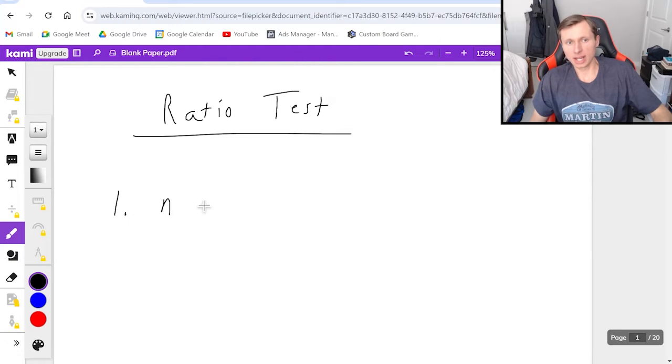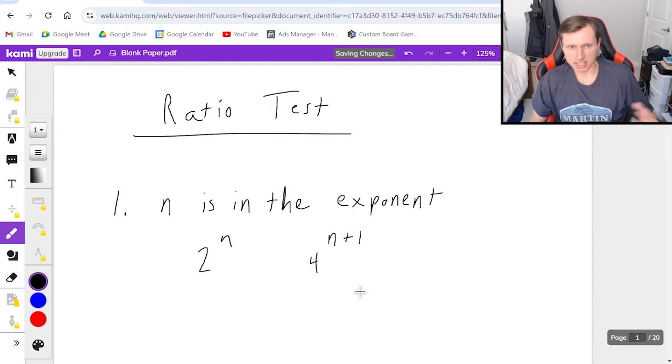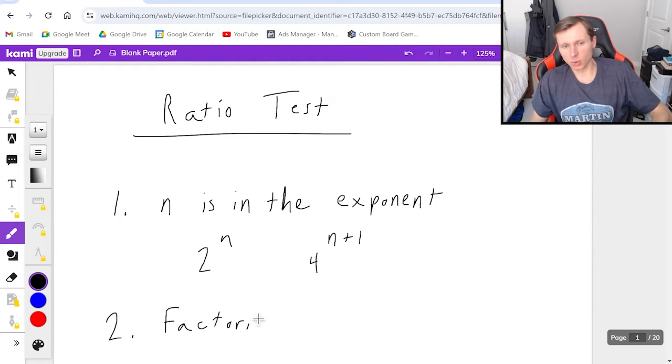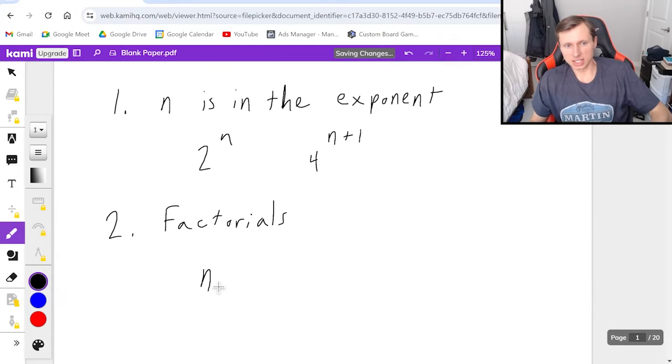Number one, when n is in the exponent, so for instance 2 to the n, 4 to the n plus 1, something like this. And two, it works really well with factorials. So for instance n factorial or 3 to the n over n plus 1 factorial.